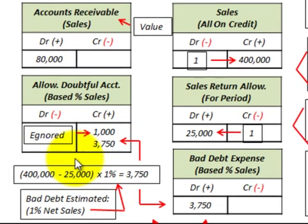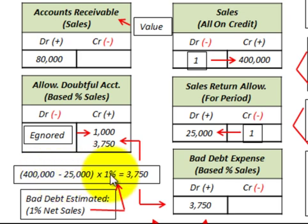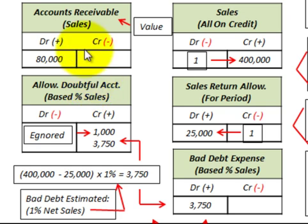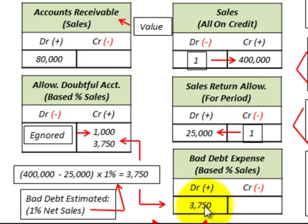For our calculation, we take net sales: $400,000 in sales minus $25,000 in sales returns and allowances, then multiply by the 1% bad debt estimate. That gives us $3,750. So we credit our allowance for doubtful accounts by $3,750 — that's the contra account that reduces accounts receivable — and we debit bad debt expense for $3,750 on the income statement.